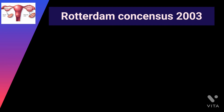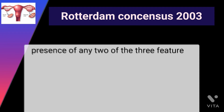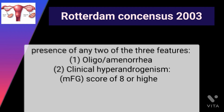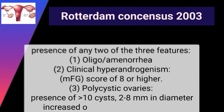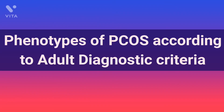According to the Rotterdam consensus 2003, PCOS is described as the presence of any two of the following three features: number one, oligo or amenorrhea; number two, clinical hyperandrogenism, which is a Modified Ferriman Gallway score greater than eight; number three, polycystic ovaries — meaning presence of more than 10 cysts with two to eight mm in diameter, combined with increased ovarian volume of more than 10 centimeters and an echo-dense stroma on pelvic ultrasound scan.